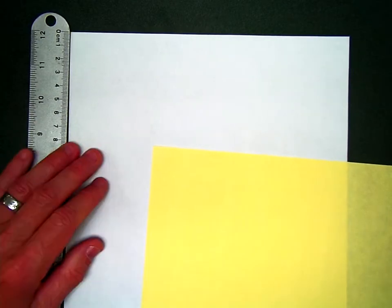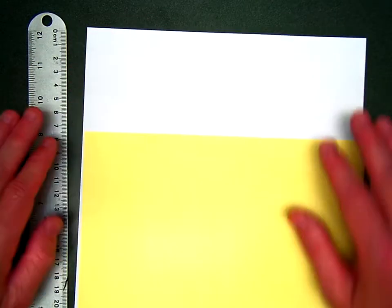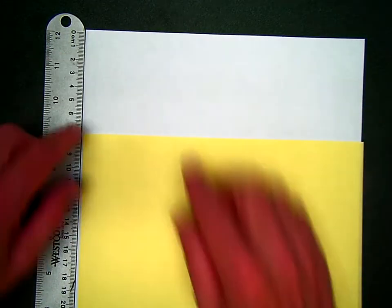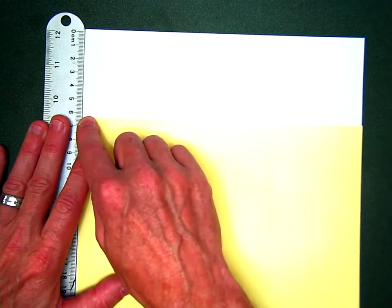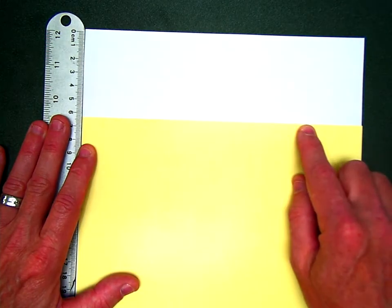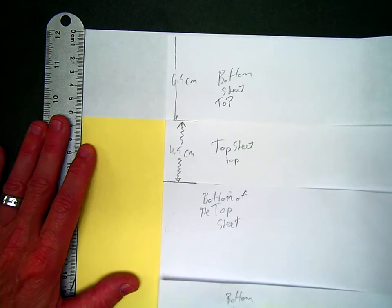Lay one sheet down. This is called the bottom sheet. Lay the other sheet on top of it. So they're overlapping exactly six and a half centimeters. Awesome. You're off to a good start. That's just like in our picture so far. Beautiful. Pause anytime you want to check stuff out. Okay.